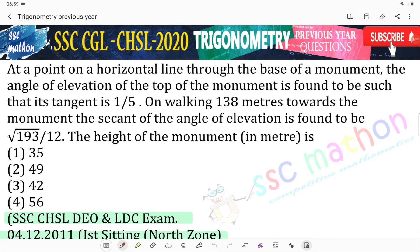At a point on a horizontal line through the base of a monument, the angle of elevation of the top of the monument is found to be such that its tangent is 1/5. On walking 138 meters towards the monument, the secant of the angle of elevation is found to be √193/12. The height of the monument is: